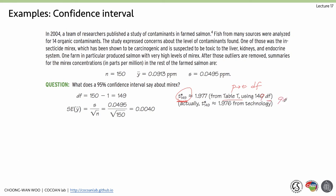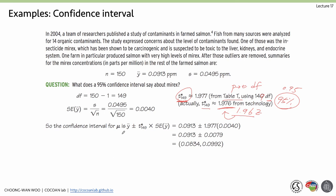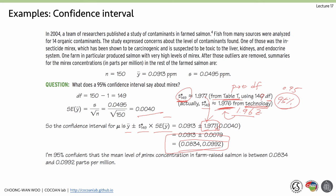For a 95% confidence interval with 149 degrees of freedom, the critical value t-star is 1.976 — similar to the z-value of 1.96 but slightly larger. The confidence interval for mu is y-bar plus or minus t-star times the standard error of the mean. The standard error here is 0.004, giving us the 95% confidence interval for Mirex. We can say: 'I am 95% confident that the mean level of Mirex concentration in farm-raised salmon is between this lower and this upper value.'